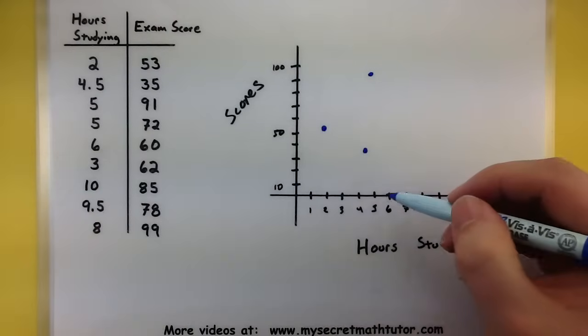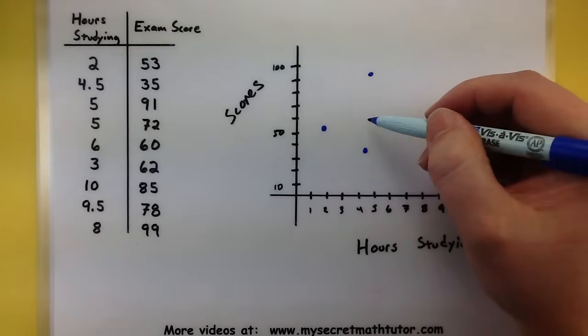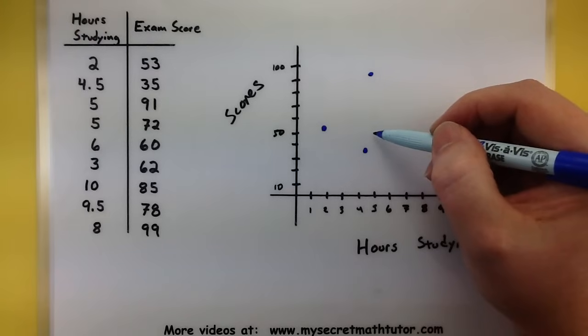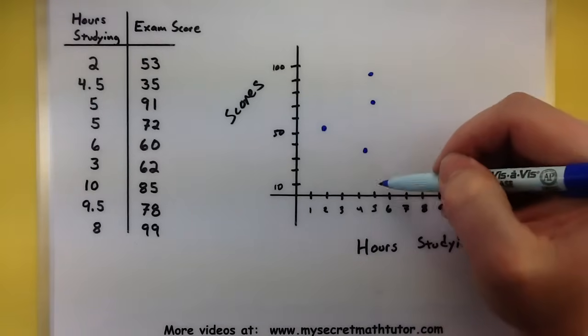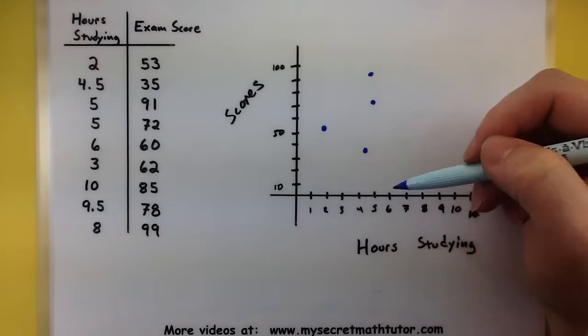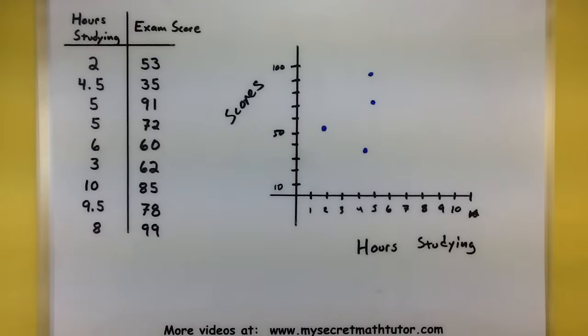Let's keep going. We also have 5 which is at 72. Let's see. So 50, 60, 72. Notice how we get 2 values of both for 5. And that's okay. Sometimes that can happen with these scatter plots.